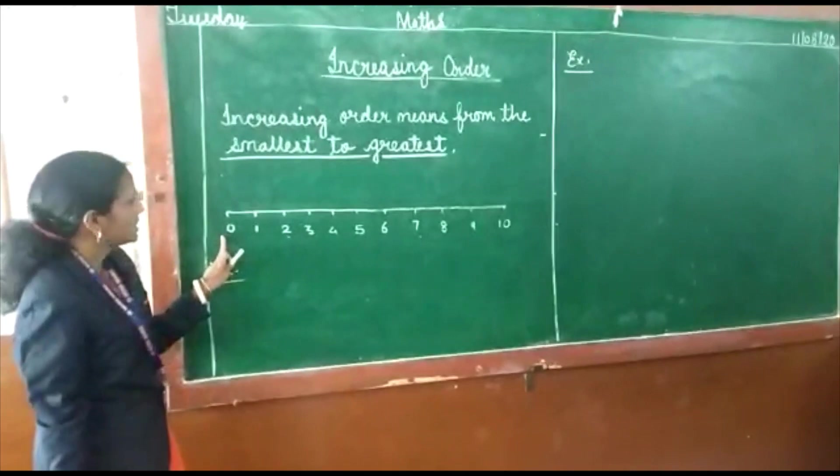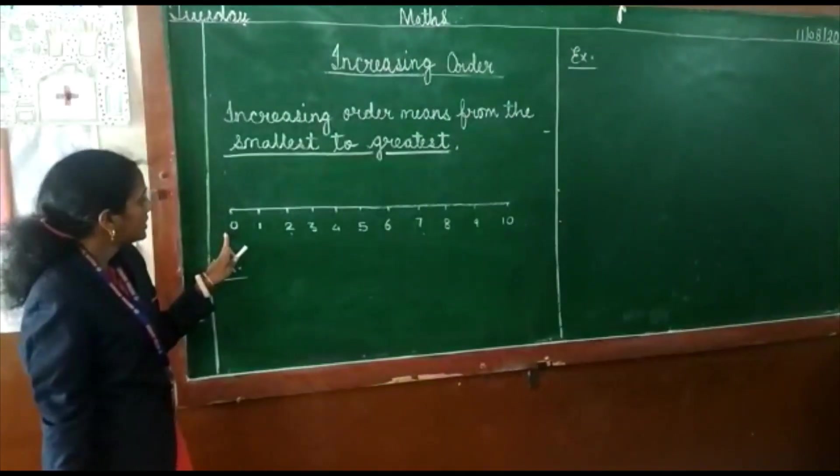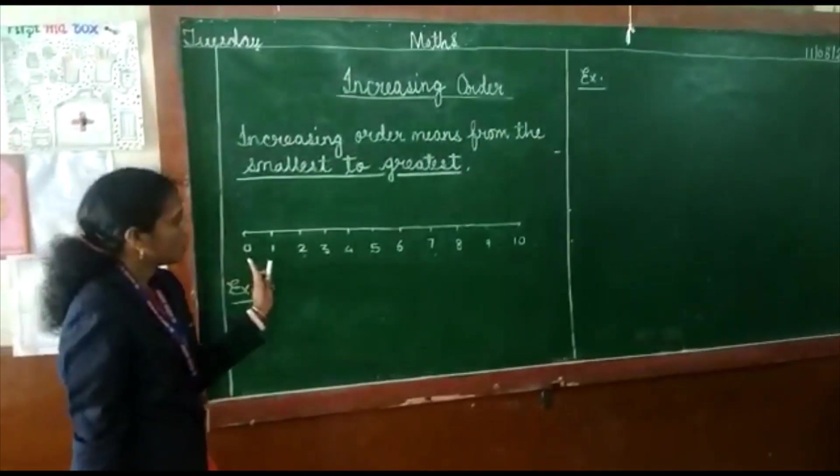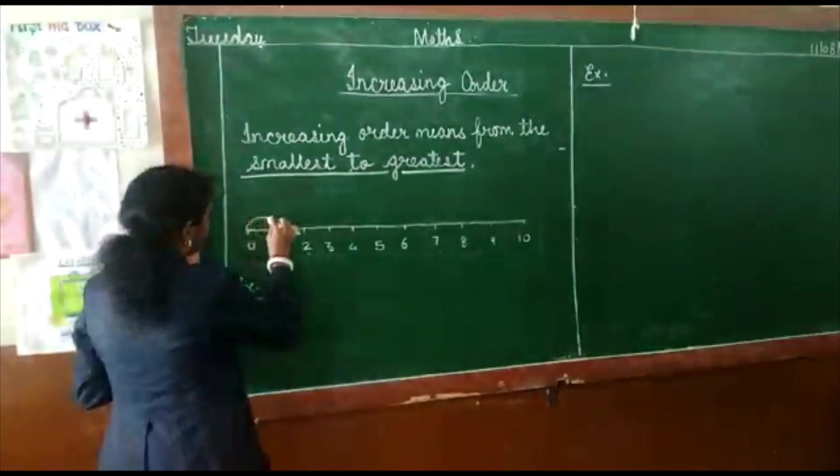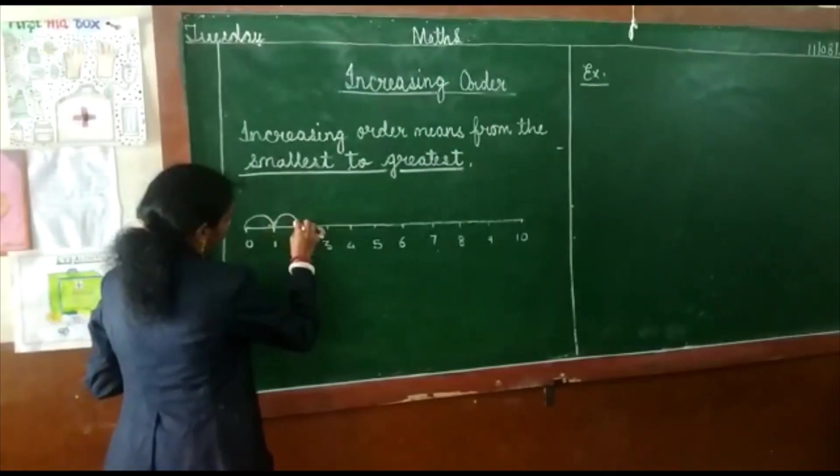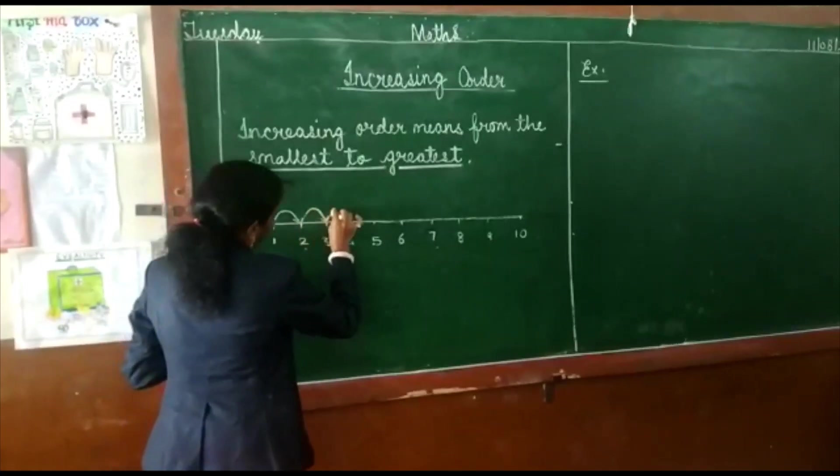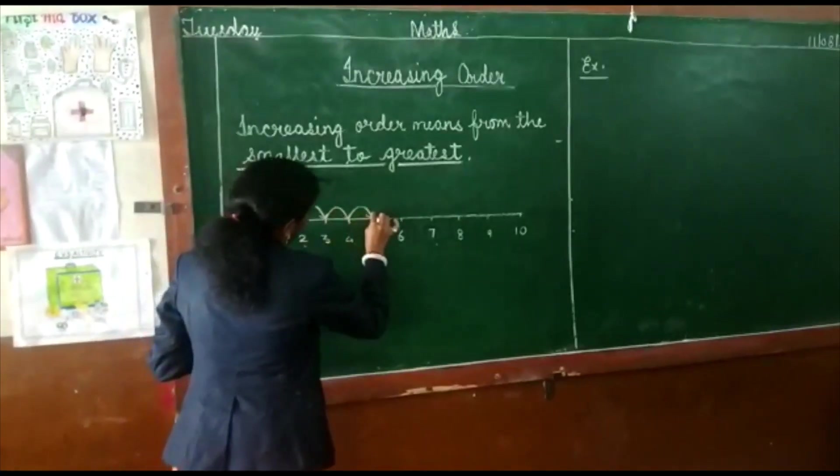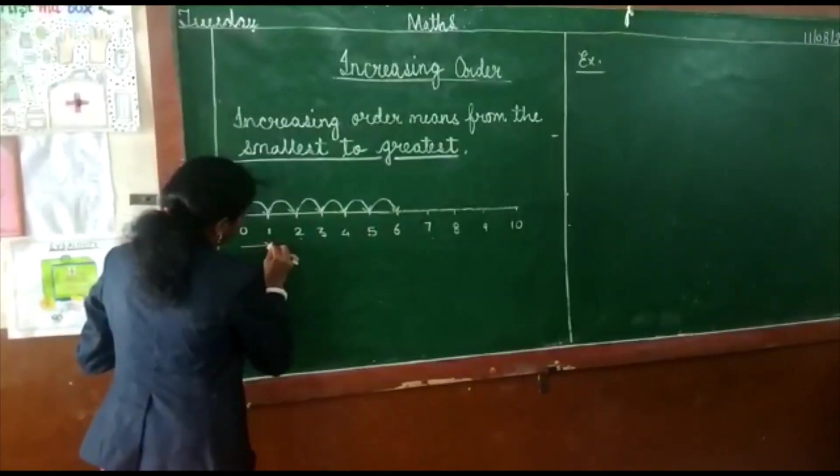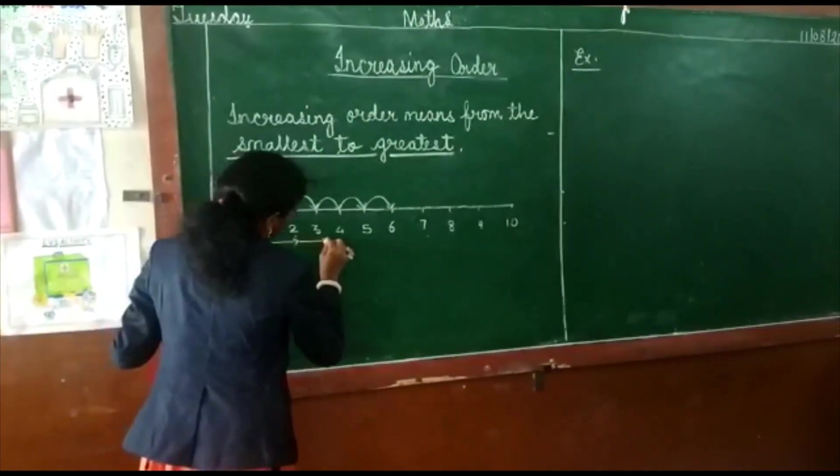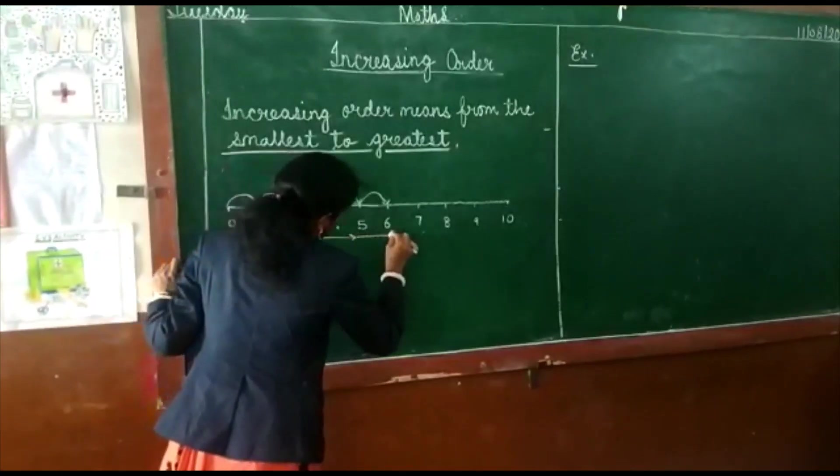As you all can see, a number line is written here. Numbers are written from 0 to 10. If we make arrows like this, that means we move forward to the next number like this.